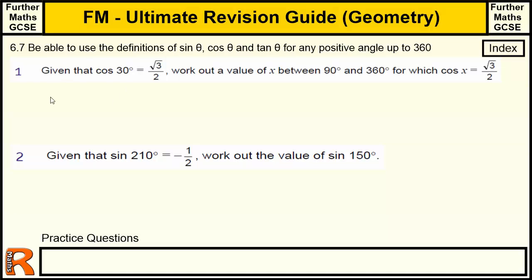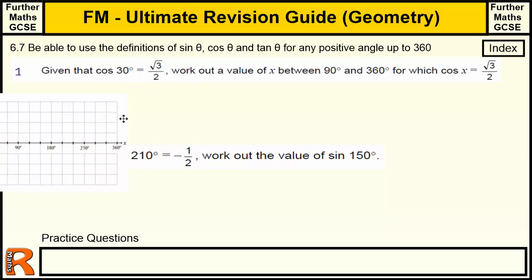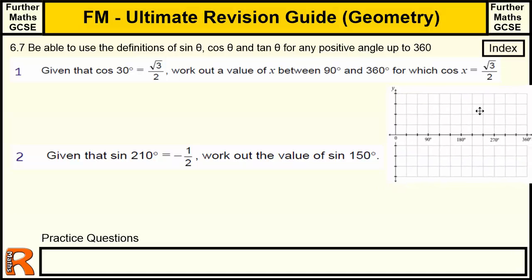So the first question here, I'm going to go through these two questions to give you some examples of the sort of things that might be asked. Given that cos 30 degrees is root 3 upon 2, work out a value of x between 90 and 360 for which cos x is root 3 upon 2. So for 30 degrees it's root 3 upon 2. Is there another one? Obviously there is, otherwise they won't be asking the question. So it helps if you can quickly sketch a cos graph.